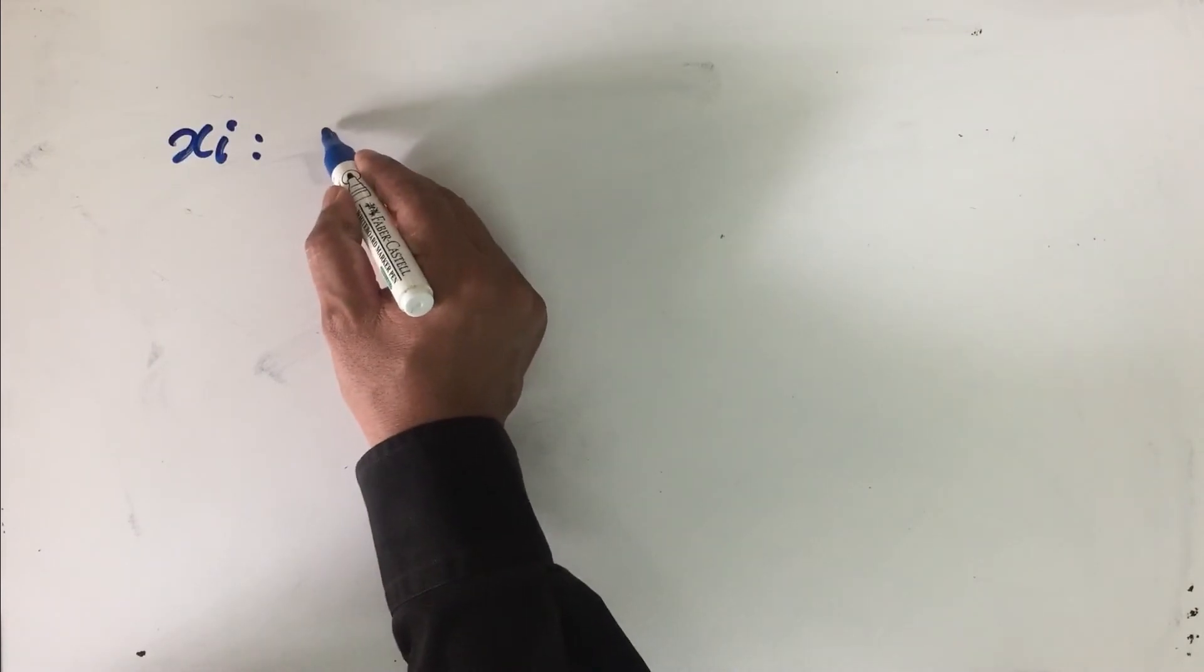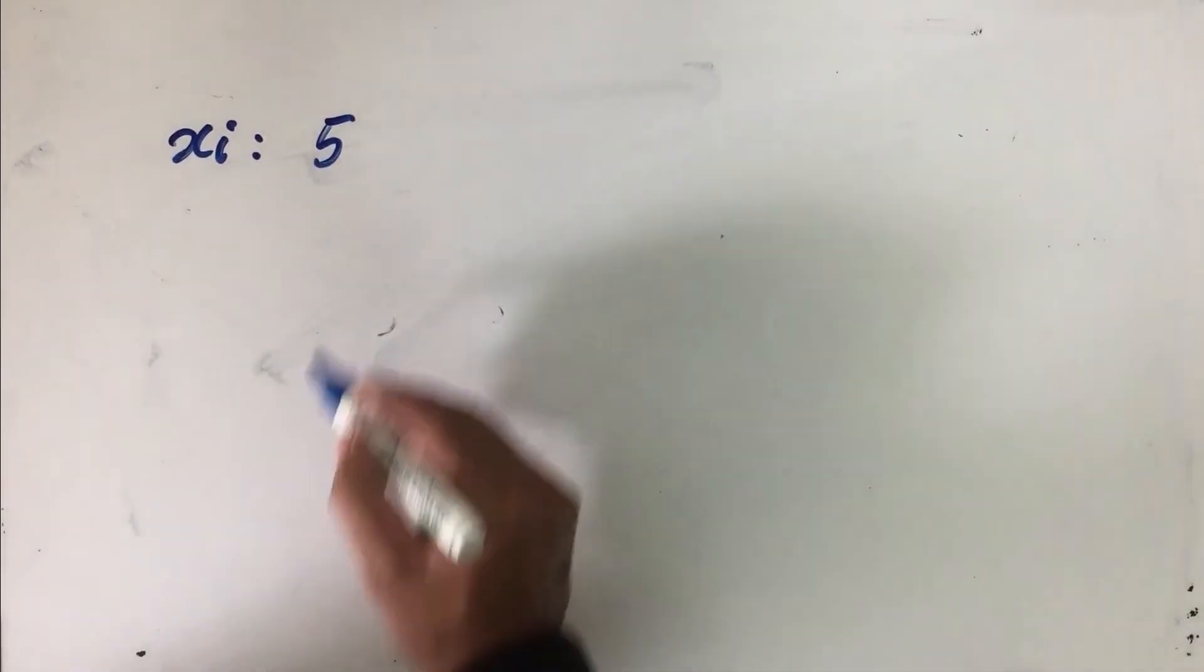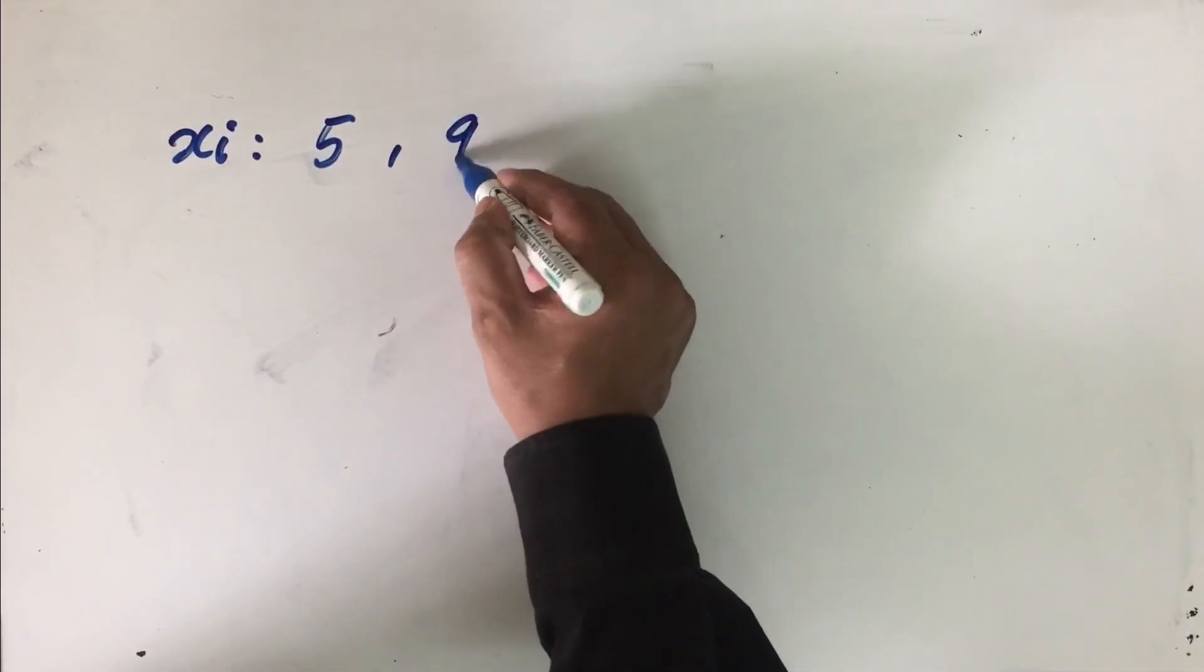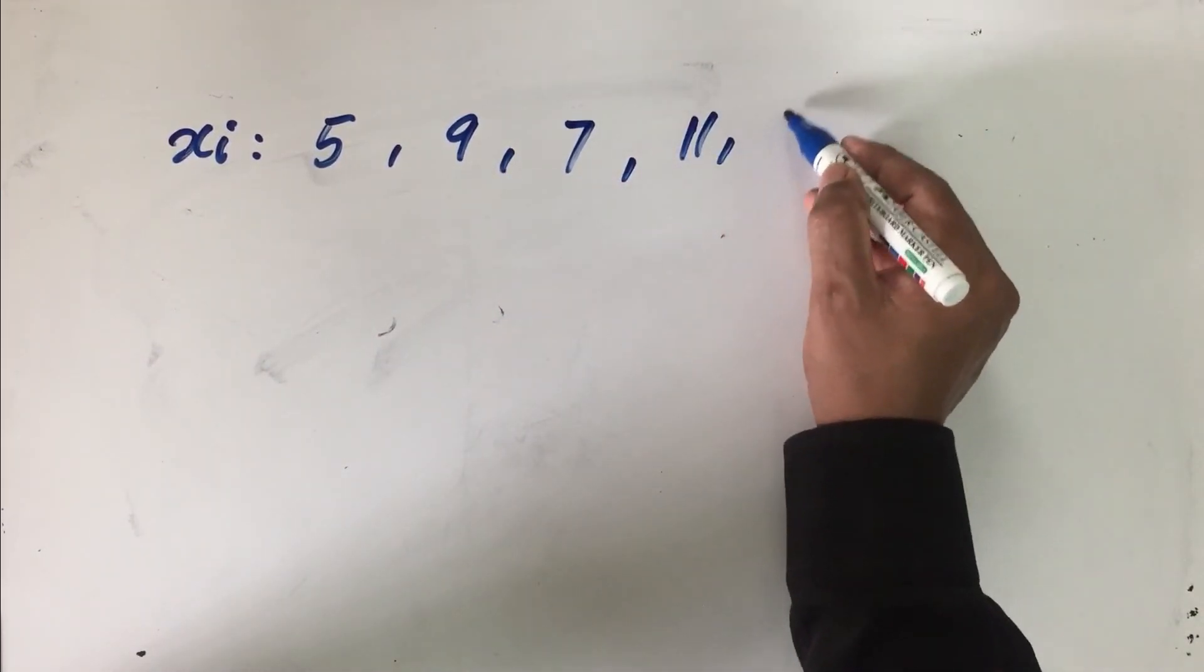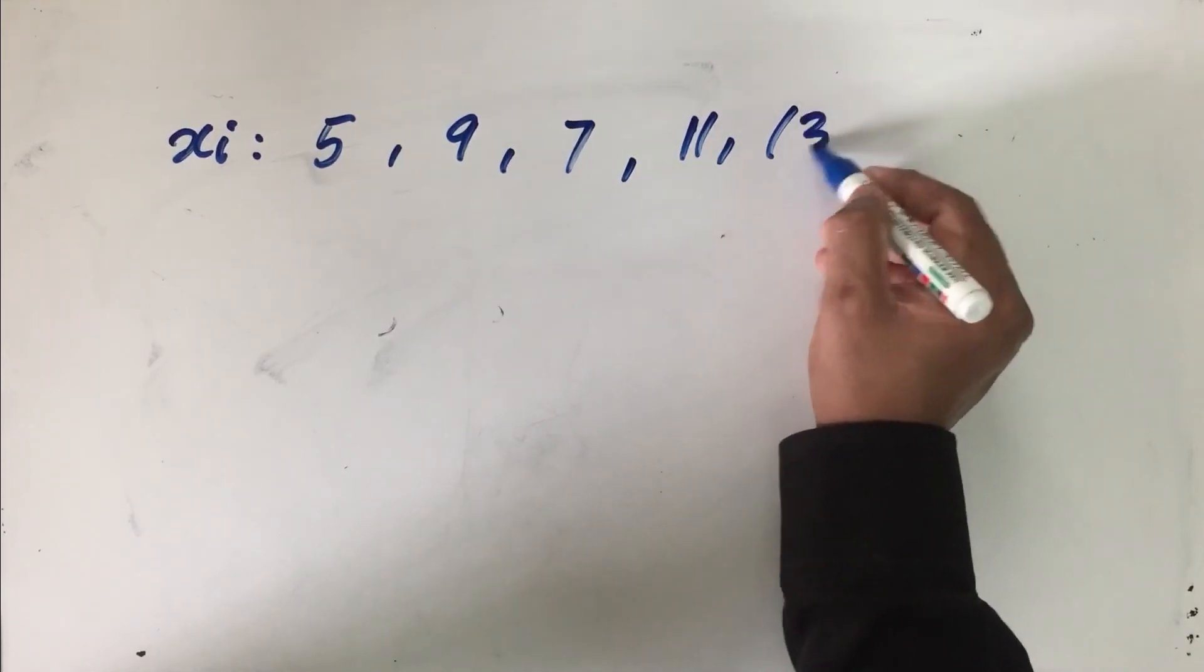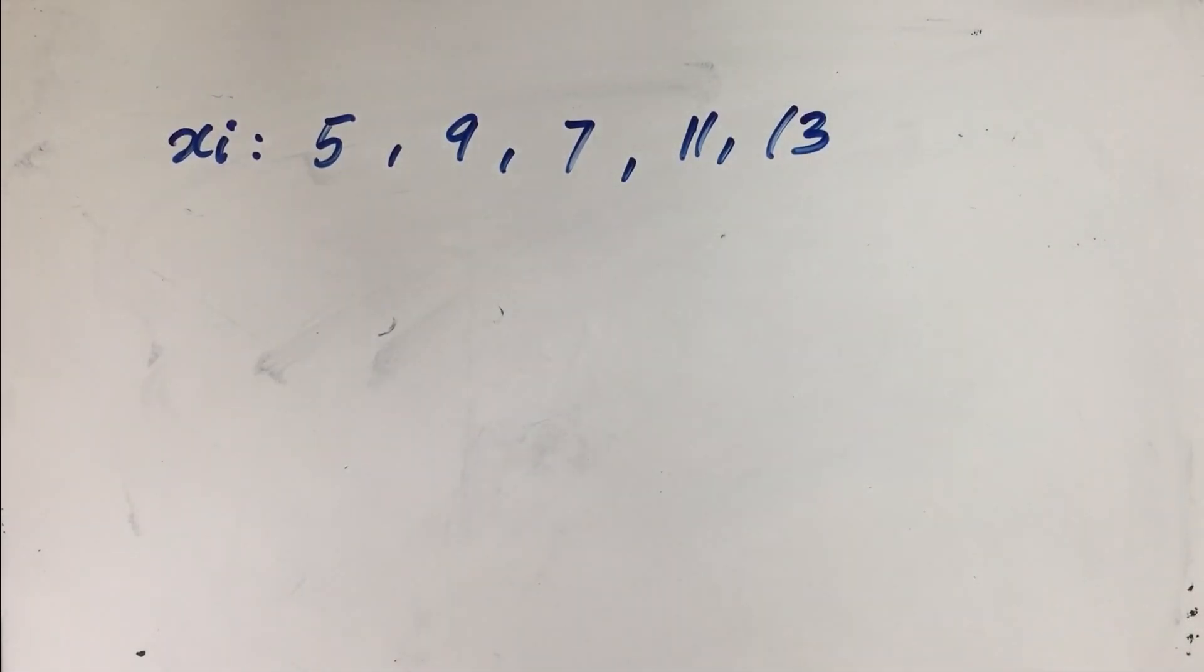So let us say that in one type of plant you find 5 flowers, another you find 9 flowers, another you find 7 flowers, 11 flowers in another type of plant, let us say 13 flowers, etc. Calculate the standard deviation of this particular distribution. So this is going to be a simple small exercise for all of you to work out and to ensure that you have understood this concept of standard deviation.